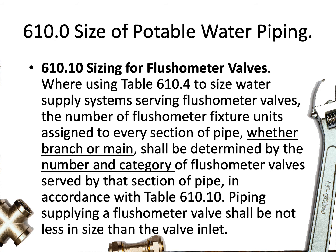The second point is that the fixture units we give to flushometer valves are not always the same — they can change depending on what part of a system we are at. Sometimes you'll see a flushometer valve on a branch valued at 40 fixture units, but by the time you get back to a main riser or the water service or the building supply, that same flushometer valve will only be worth 10 fixture units. So they can decrease and change values as you progress through a building, and we'll explain that in this video.